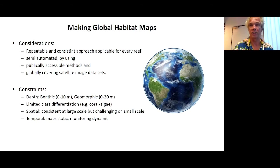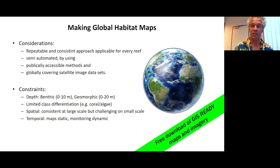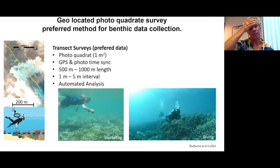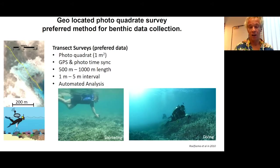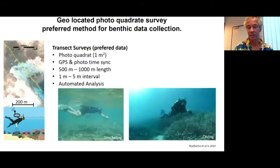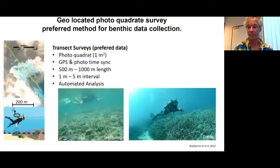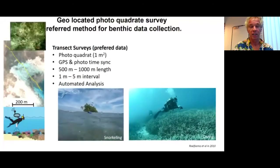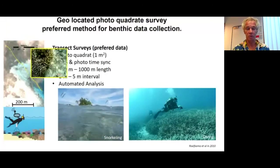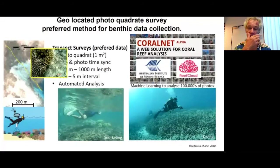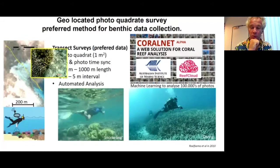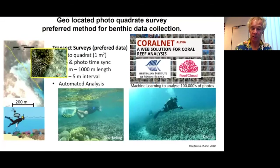One really exciting aspect of the Allen Coral Atlas and the GBR work is that all the data output is GIS-ready, and the maps and imagery are available for anybody in the world to download. To understand what's on the ground, we do georeferenced photo transects. We set up a standard protocol that anybody with a camera and a GPS can follow — very limited impact — producing photos georeferenced to the Earth's surface that we can link to satellite imagery. This imagery can be analyzed with machine learning through CoralNet or ReefCloud with AIMS.